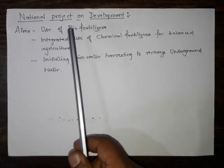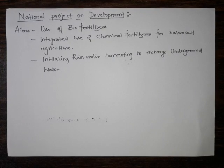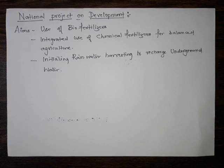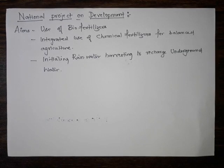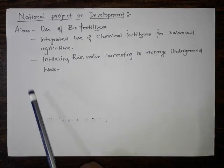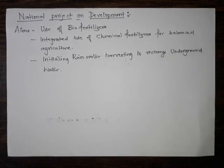The National Project on Development aims at use of bio-fertilizers. In board examinations, they may ask why organic fertilizers are better than chemical fertilizers — chemical fertilizers can deplete the soil, whereas organic fertilizers can enhance soil fertility. The project also aims at integrated use of chemical fertilizers for balanced agriculture to boost agricultural production.